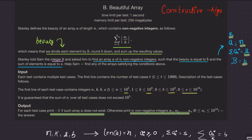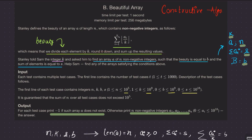Welcome back everyone. Let's solve this question: Beautiful Array. Questions based on constructive algorithms can be tricky and may look vague at times, but this is a relatively simple question. They define the concept of beauty: to get the beauty of an array of non-negative integers, we divide each element by k, round it down, and sum up the resulting values. Pretty simple definition of beauty.